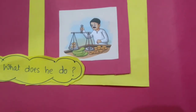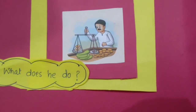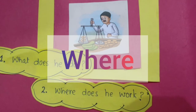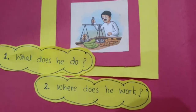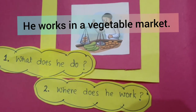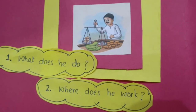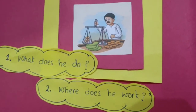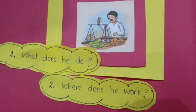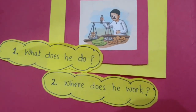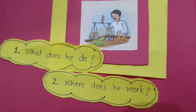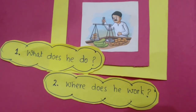Now, what second question do you have to think about for writing the second sentence? You have to think: where does he work? Do you know where does he work? Some Green Grocers have shops in the market, so you can write: he works in the market. But these days, if you have observed the Green Grocers during this lockdown period, they are coming to our homes to deliver the fruits and vegetables. So you can also write: a Green Grocer delivers fruits and vegetables at home.